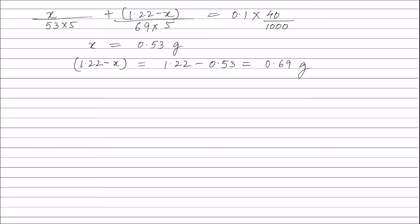Therefore, equivalents of sodium carbonate in 20 ml of the solution plus equivalents of potassium carbonate in 20 ml of the solution is equal to equivalents of barium carbonate.